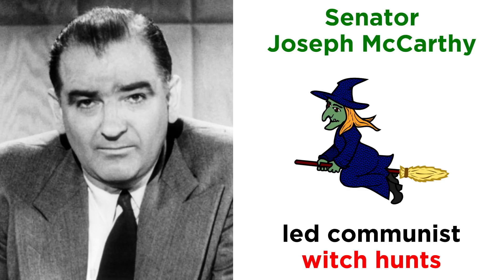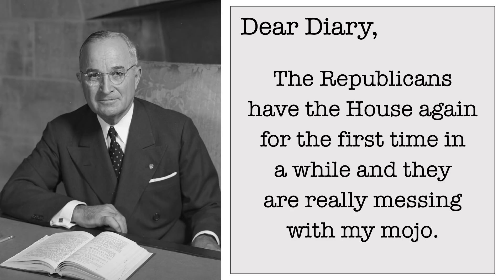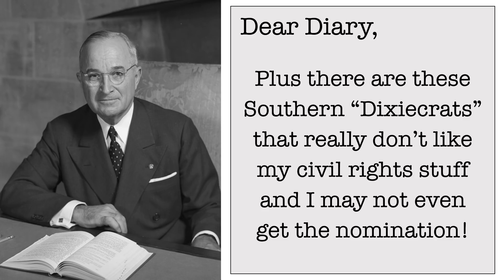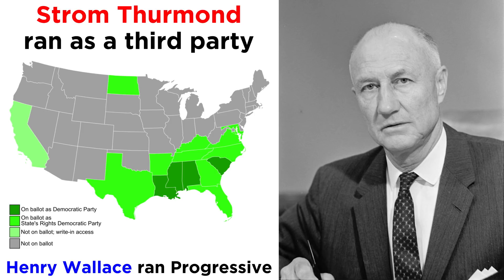But there were troubling domestic side effects, like the communist witch hunts of Joseph McCarthy. As the election of 1948 neared, Truman had become quite unpopular due to his handling of the Cold War and a railroad strike the previous year. The Republicans had returned to power in the House in 1946 for the first time since 1930, and they blocked much of his legislation. Moreover, he faced a mutiny by the Southern Dixiecrats over his actions on civil rights, and his renomination at the 1948 Democratic Convention was no sure thing. The Dixiecrats, led by Strom Thurmond, walked out and Thurmond ran for president as a third party candidate, while former Vice President Henry Wallace revolted on the left and became the nominee of the Progressive Party.